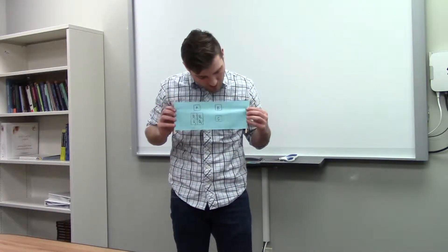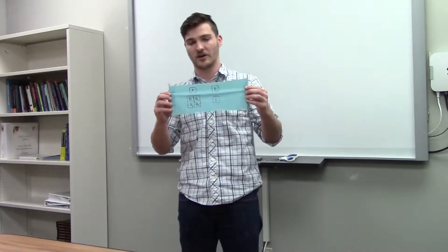So here we have a yoga band with four squares on it and each square has a different colored side, either red, green, black or red.